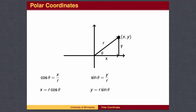To go in the opposite direction, we wish to find x and y if we know the length and direction. We know that the cosine of theta is x over r, and the sine of theta is y over r, so x equals r times the cosine of theta, and y equals r times the sine of theta.